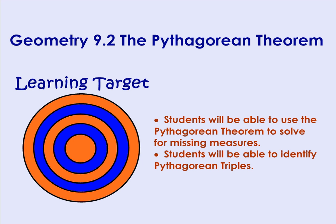Section 9.2 The Pythagorean Theorem. In this lesson you should be able to use the Pythagorean Theorem in order to solve for missing measures, and you should also be able to identify Pythagorean triples.